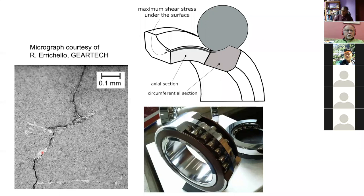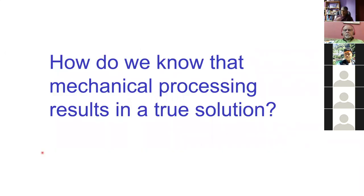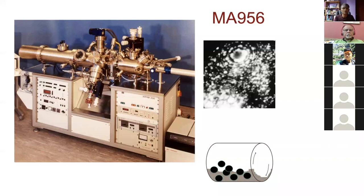How do we know that mechanical processing leads to a true solution? The obvious method is an atom probe field ion microscope. You have a very sharp tip of the material, apply a very large electrical field, and an imaging gas ionizes when it touches an atom, spreading out in the electrical field to give a magnification of about 10 million. Here is an image from mechanically alloyed material where each dot is an individual atom. You also have a time-of-flight mass spectrometer so you can pull out an atom, measure its flight time, and get chemical information per atom.